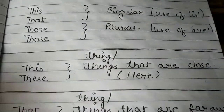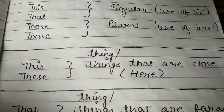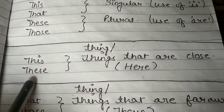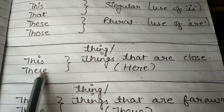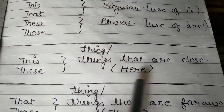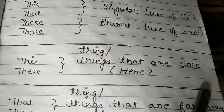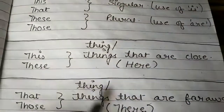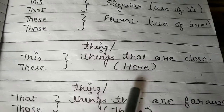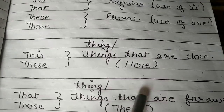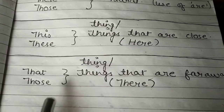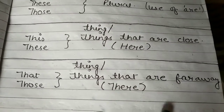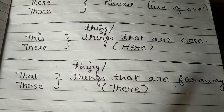The next thing to keep in mind: this and these are the words we use for things that are close or near to us — we can think of them as being here. And that and those are used for things that are far away from us — we can think of them as being there.